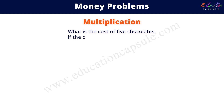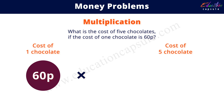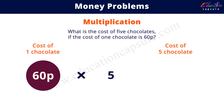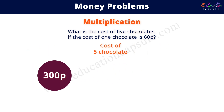Next is multiplication. What is the cost of five chocolates if the cost of one chocolate is 60 pence? The cost of one chocolate is 60 pence. To find the cost of five chocolates, we multiply the cost of one chocolate by 5, since we are finding the total and all chocolates are the same price. Therefore, the cost of five chocolates is 60 pence times 5, which equals 300 pence.